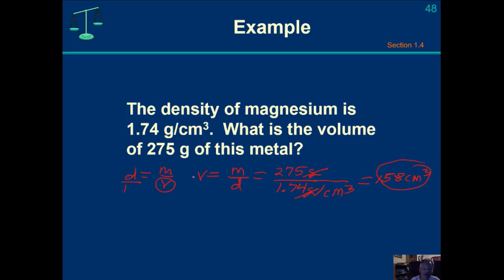What if I wanted to solve for the mass? My recommendation: start with density equals mass over volume, then solve for mass. Mass equals density times the volume. It's just a three-variable equation — you can solve for any one of those three variables.